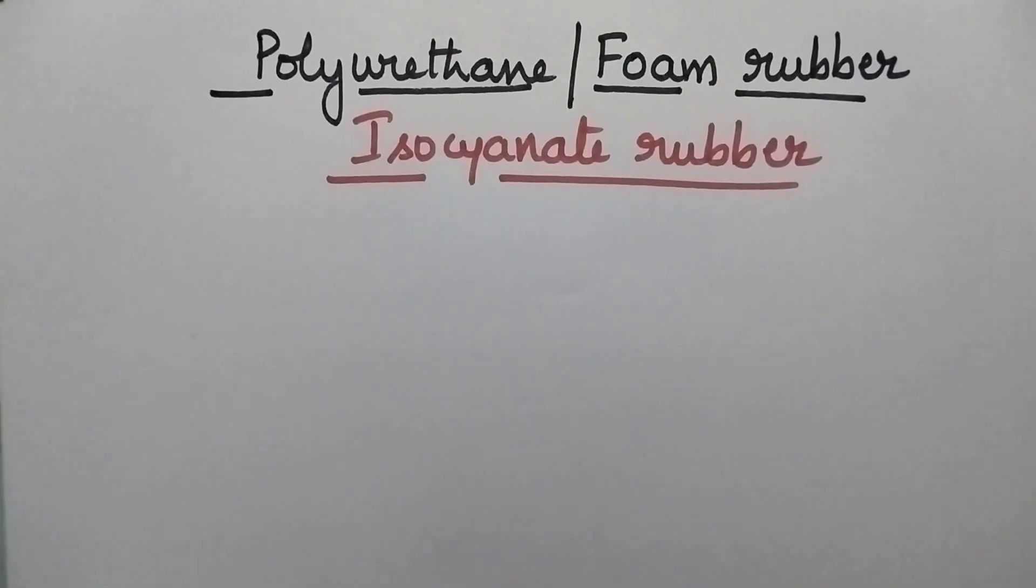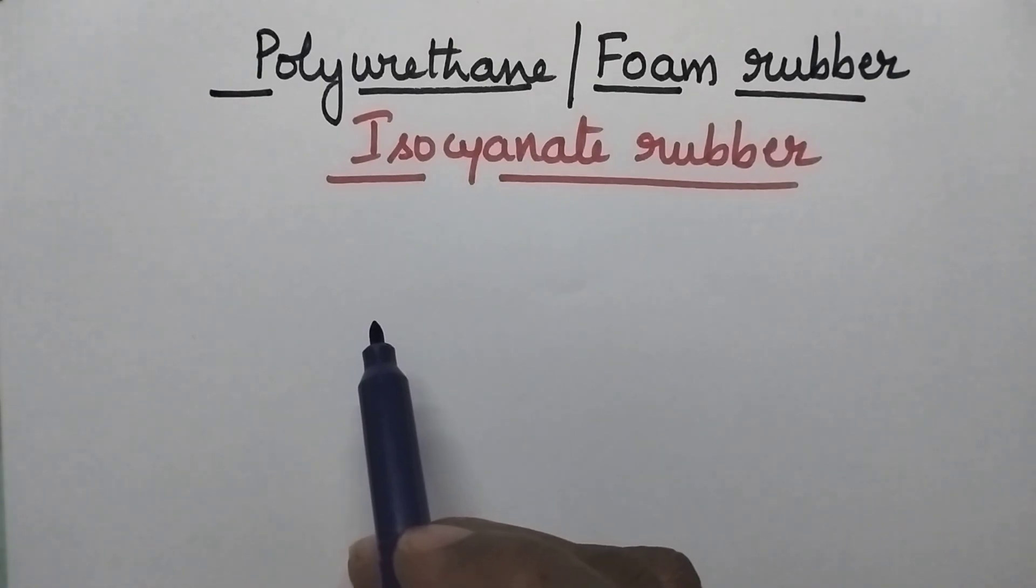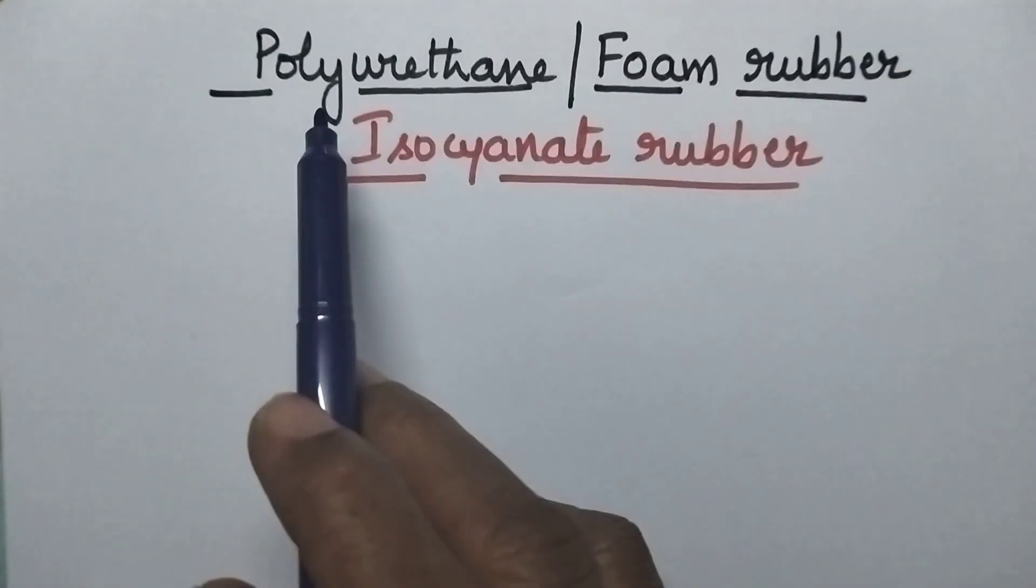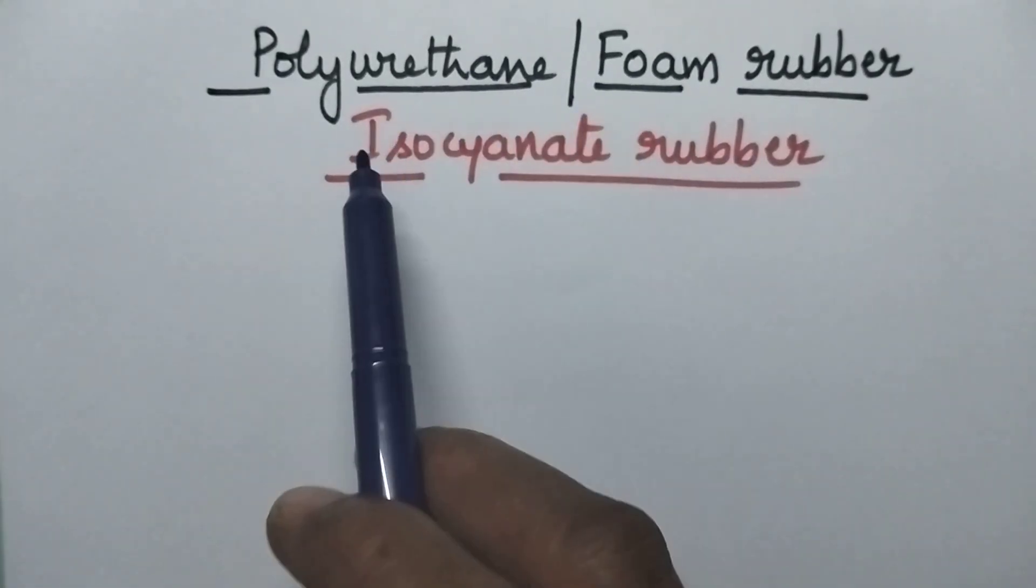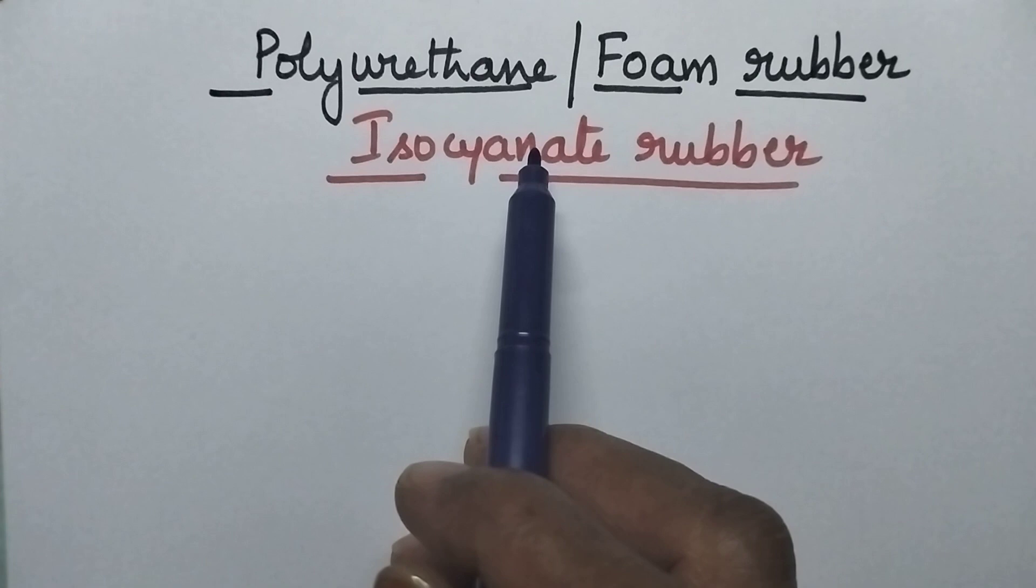Hello students, welcome back to my channel. In this video I am going to discuss in detail about the preparation, properties and applications of polyurethane rubber, which is also known as foam rubber or isocyanate rubber.